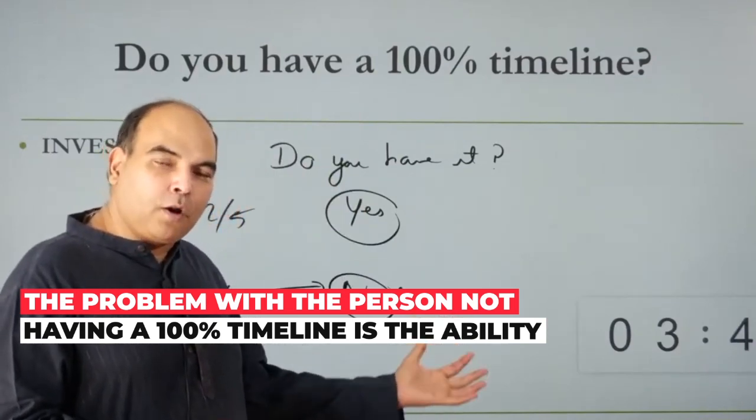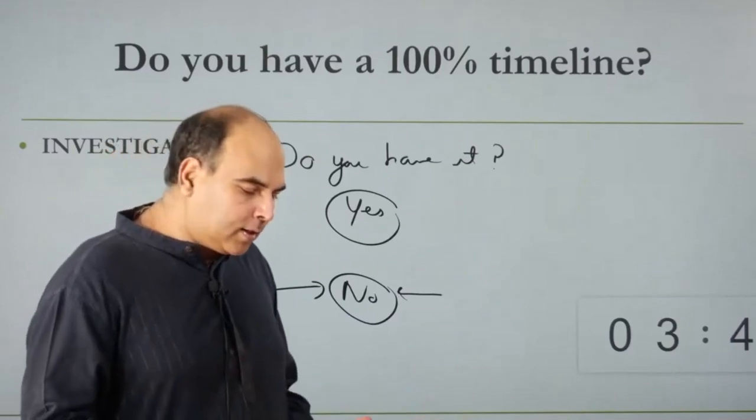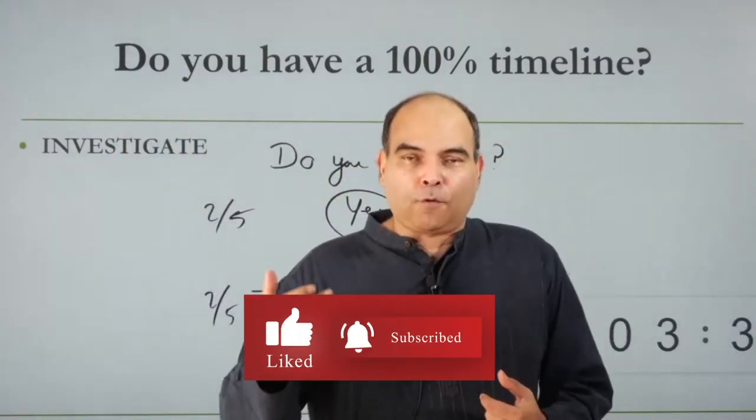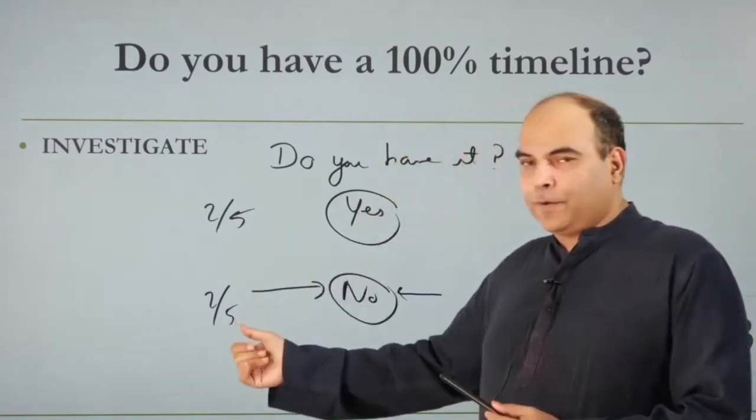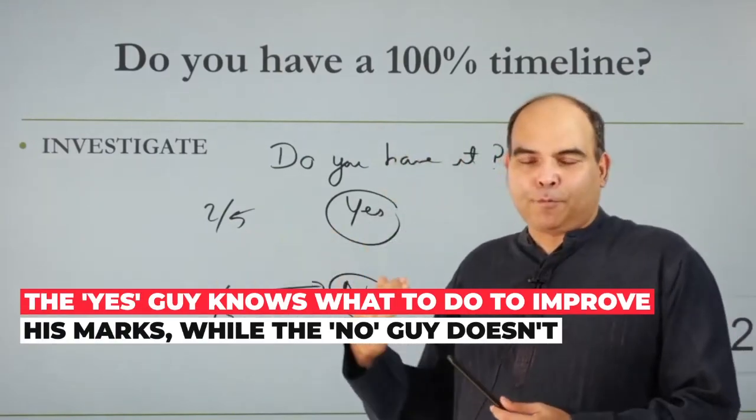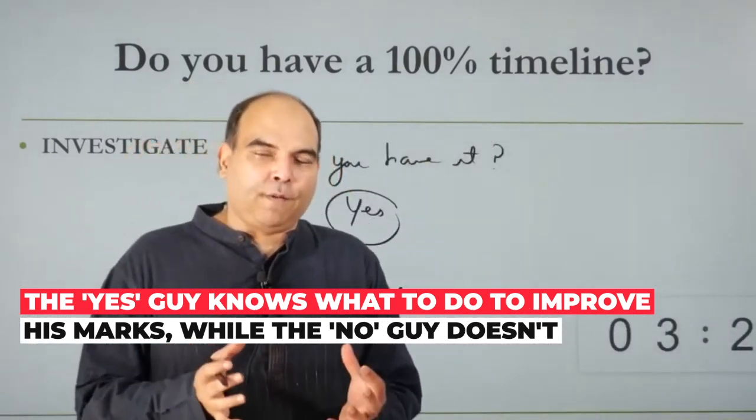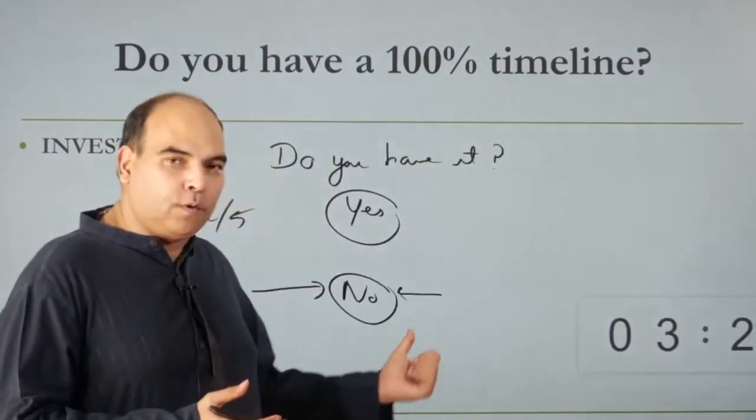His problem is that he can't get better than this. Unless you raise that three out of five in unlimited time to five out of five, or at least four and a half out of five, you don't have a chance of improving this. This guy can just improve it by improving his speed and his accuracy within time, within the given framework. He knows what to do. You don't know what to do if you belong to this category.